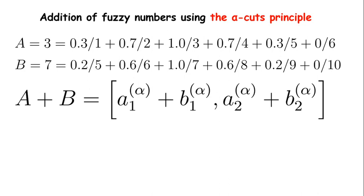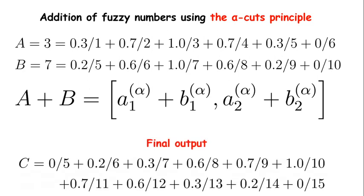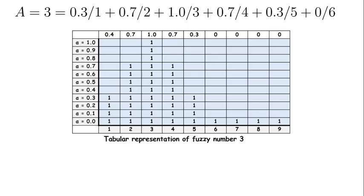Once you add these two using this technique, you will get another fuzzy number and we named it as Z. This is the tabular representation for fuzzy number 3.